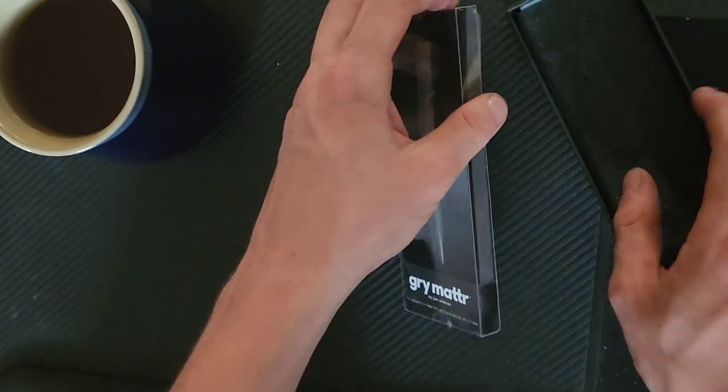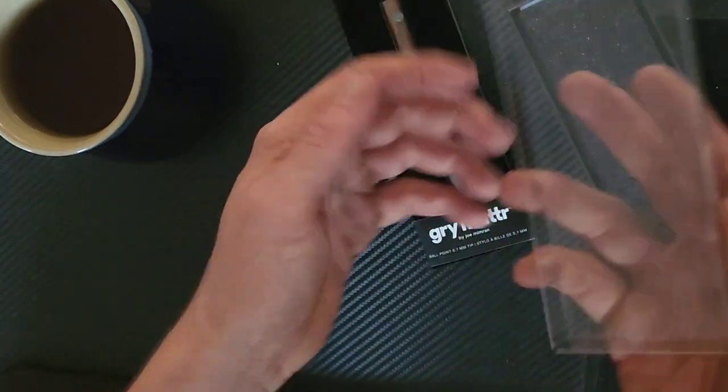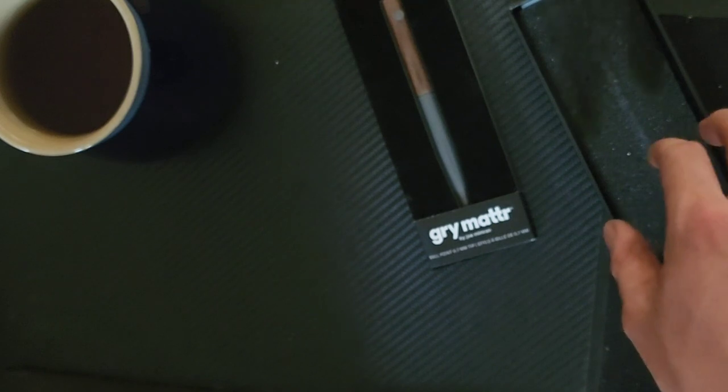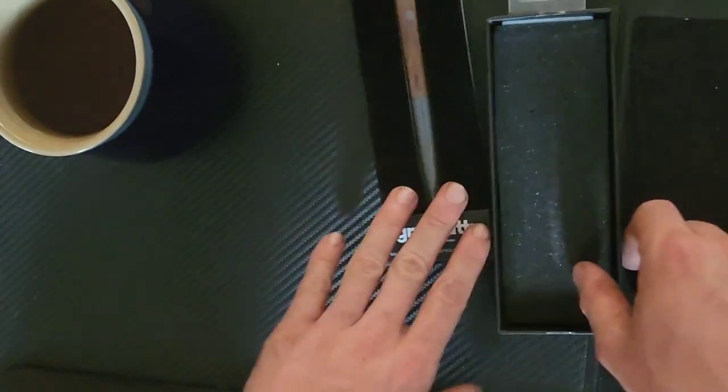So the front of the box is clear plastic, which is pretty wasteful, but whatever, I can get over it. I'm going to disassemble this and then complain about the middle for a second.